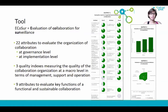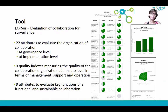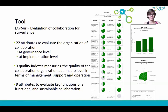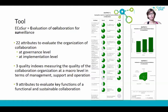The tool consists of 22 attributes for the evaluation of the organization of collaboration, both at the governance and implementation level, as well as three quality indexes that measure the quality of collaboration organization at a macro level in terms of management, support, and operation. Finally, there are nine attributes considered to represent key functions for a collaboration to be functional and sustainable. All results are displayed in graphical representation: one pie chart for each organizational attribute, one histogram including results for the three indexes, and one spider chart for the nine function attributes results.